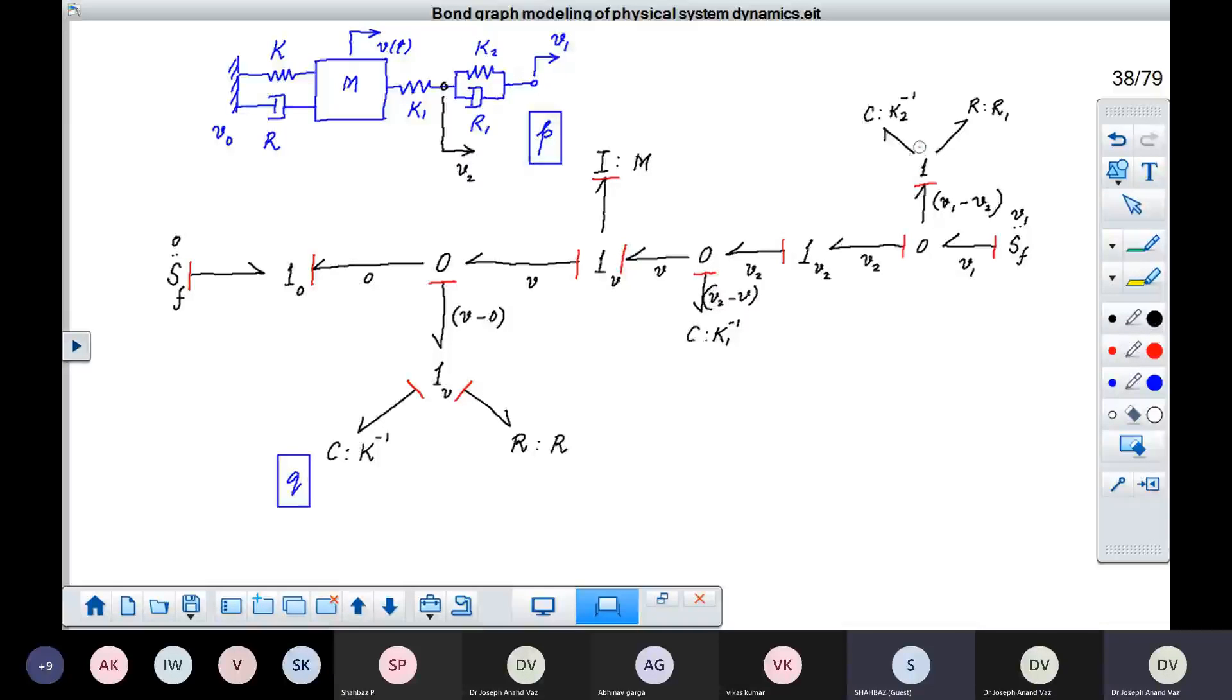Over here, again, we'll have to take this C element in integral causality. And this R element will go like this. So the nature of causality of this bond and this bond, they're different. This is giving effort. This is giving flow. So this is the complete causality for this system.